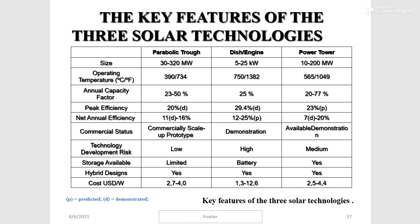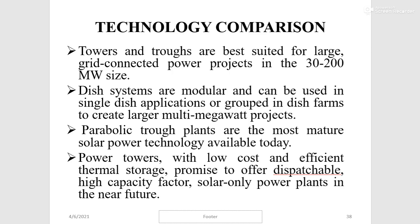In terms of technology comparison, towers and troughs are best suited for large grid-connected power projects in the 30 to 200 megawatt range. Dish systems are modular and can be used as single units or grouped in dish farms to create larger multi-megawatt projects. Parabolic trough plants are the most mature solar power technology available today. Power towers with low-cost and efficient thermal storage promise to offer dispatchable, high-capacity-factor solar-only power plants in the near future.